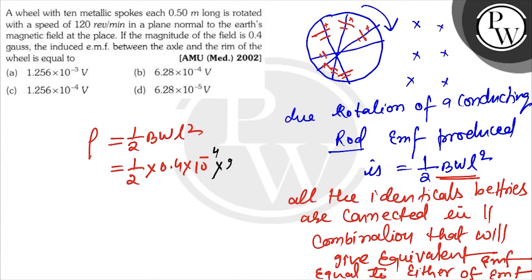Omega equals 2π f into l squared, which is 1/4. So 1/2 times 0.4 times 10^-4 times 2π, which is 3.14, times f, which is 120/60 per second, times 1/4.